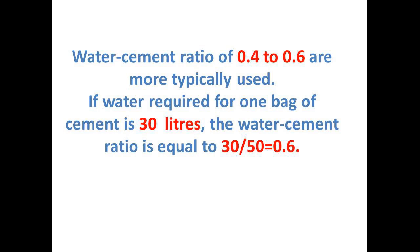If water required for one bag of cement is 30 litres, the water cement ratio is equal to 30 divided by 50, which is equal to 0.6.